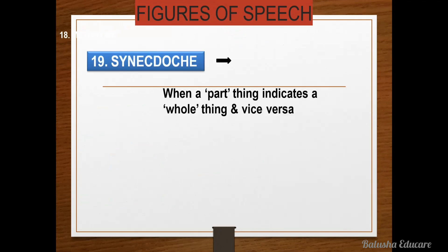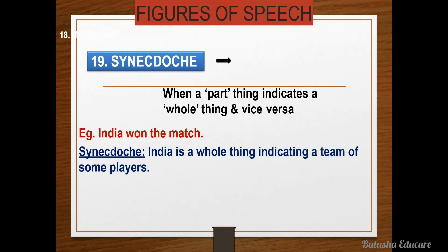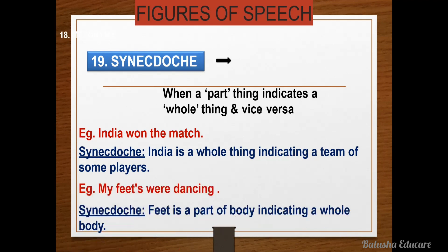Next is synecdoche — when a part thing indicates a whole thing or vice versa. For example, 'India won the match' — synecdoche figure of speech, because 'India' is a whole thing indicating a team of some players. The word 'India' is used in reference to the players. Another example: 'My feet were dancing' — synecdoche figure of speech, because feet is a part of the body indicating the whole body.